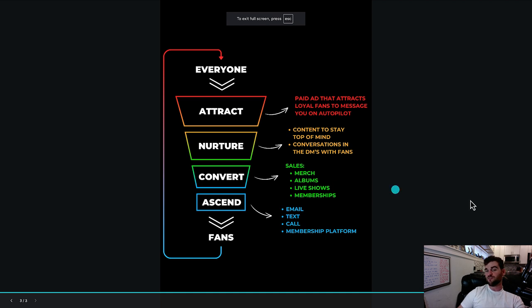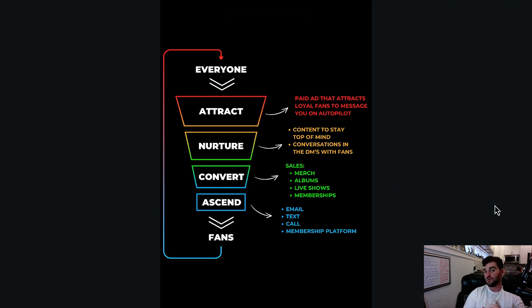So at that point, once they've bought something, you've got their name, email, phone number, address, you can put them on your email list and you can continue to nurture those people through email as well. And then what we do is ascend those people through email, text, call, and you can even put them on a membership platform.